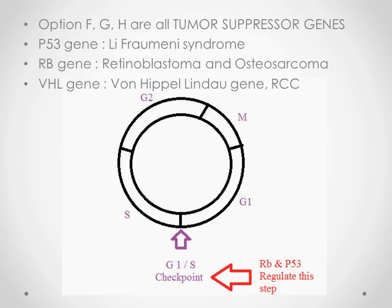The last three options are F, G, and H. Option F is the P53 gene. The P53 gene is involved in a wide variety of neoplasias — in almost all neoplasias, the P53 gene gets mutated. However, specifically, if you are asked which neoplastic syndrome P53 is associated with, the answer is Li-Fraumeni syndrome. Remember that name: Li-Fraumeni syndrome with P53. Option G is the RB gene. RB stands for retinoblastoma, which involves the two-hit hypothesis — a very important and frequently tested concept.